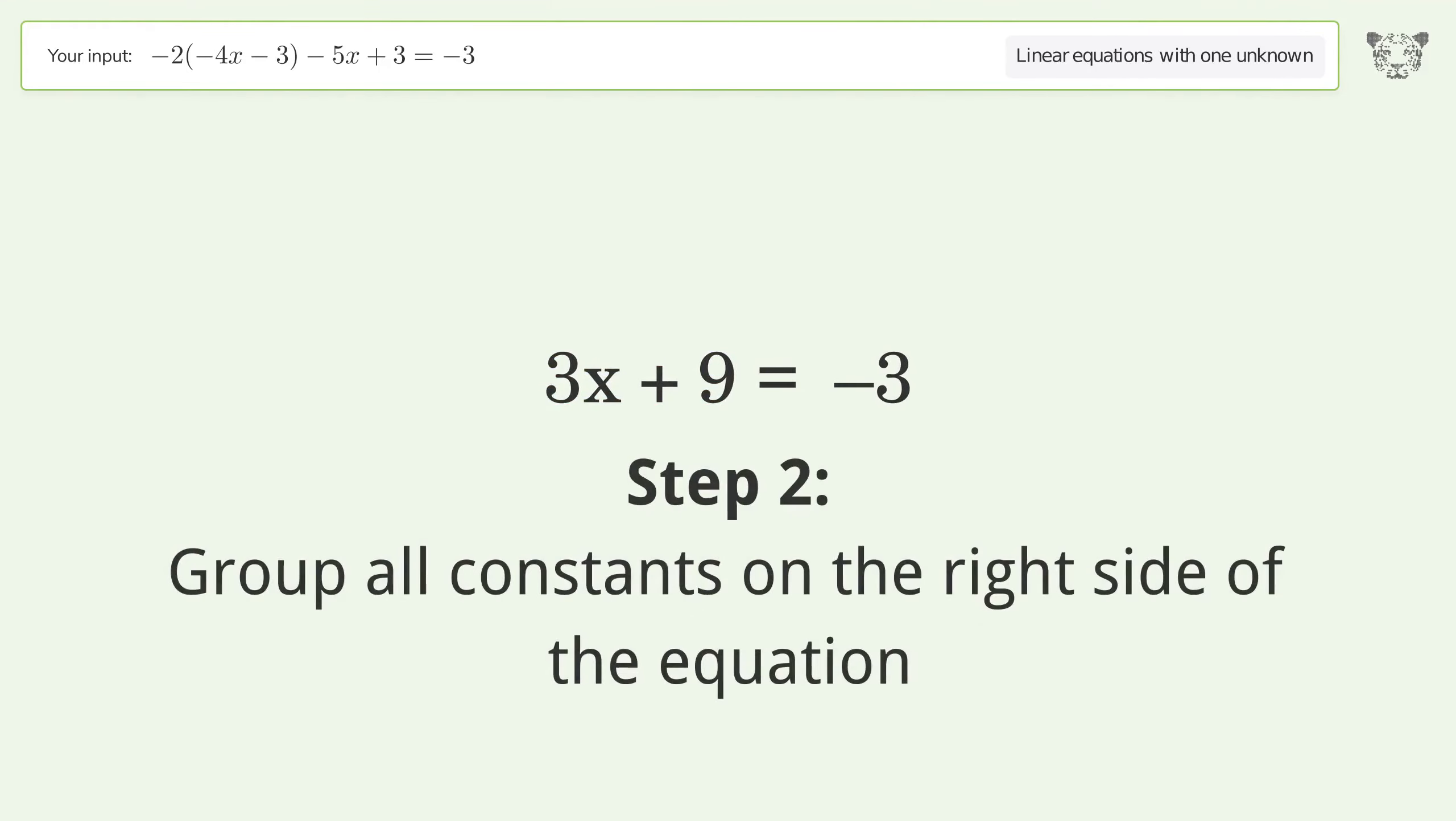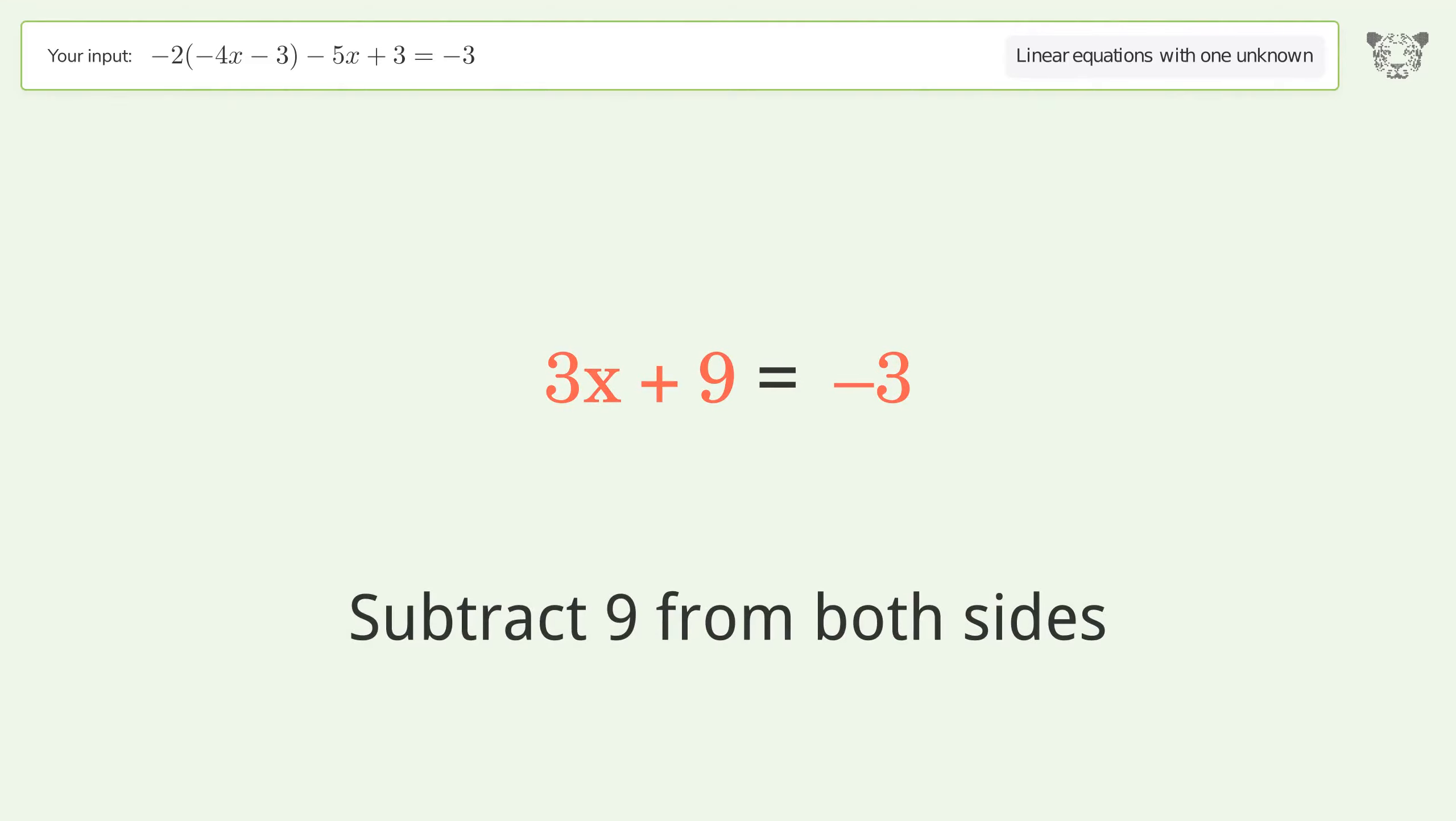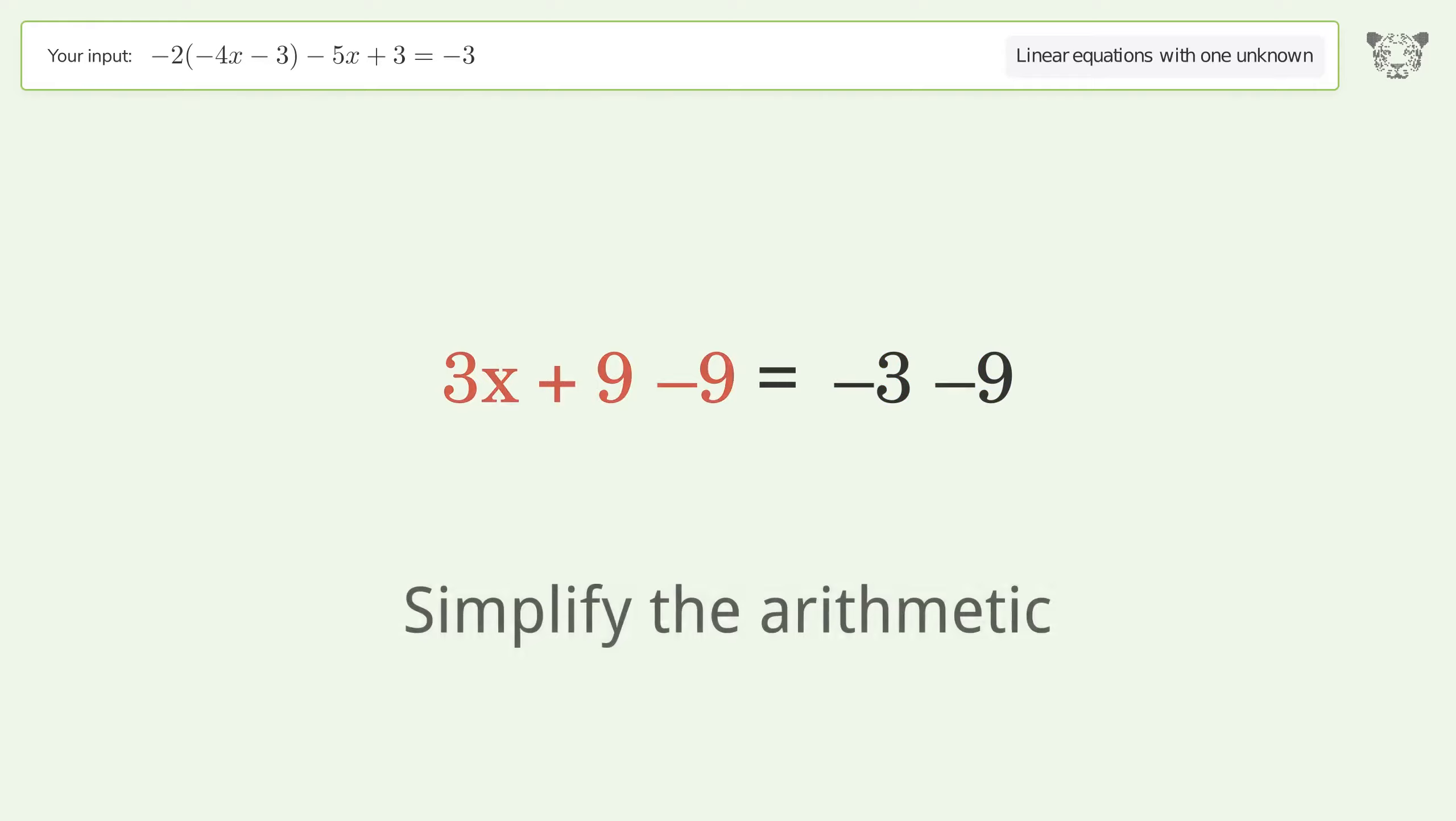Group all constants on the right side of the equation. Subtract 9 from both sides. Simplify the arithmetic.